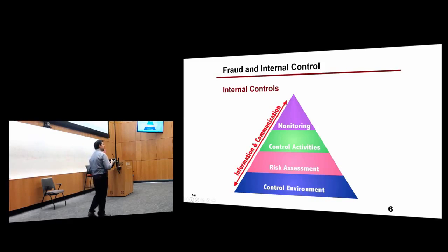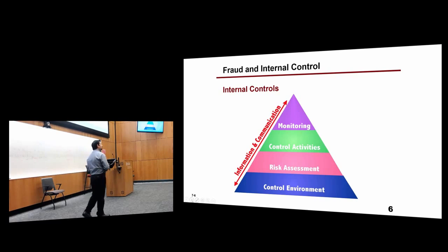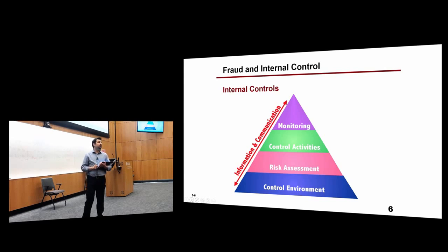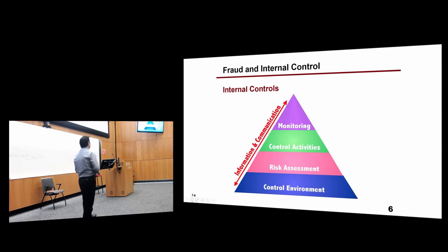For example, if there's a risk of someone taking money from the drawer, you buy a safe and lock the money inside. If there is easy access to inventory, you lock it and assign swipe cards. If something goes missing, you check the logs — who accessed that inventory? Those are different control activities that mitigate the various risks.